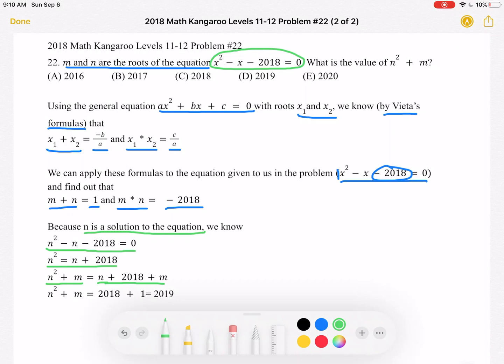Now, we already know from over here that m + n, the sum of the roots, must be equal to 1. And guess what? We see it over here again, m and n. So we should be able to replace m + n with 1.